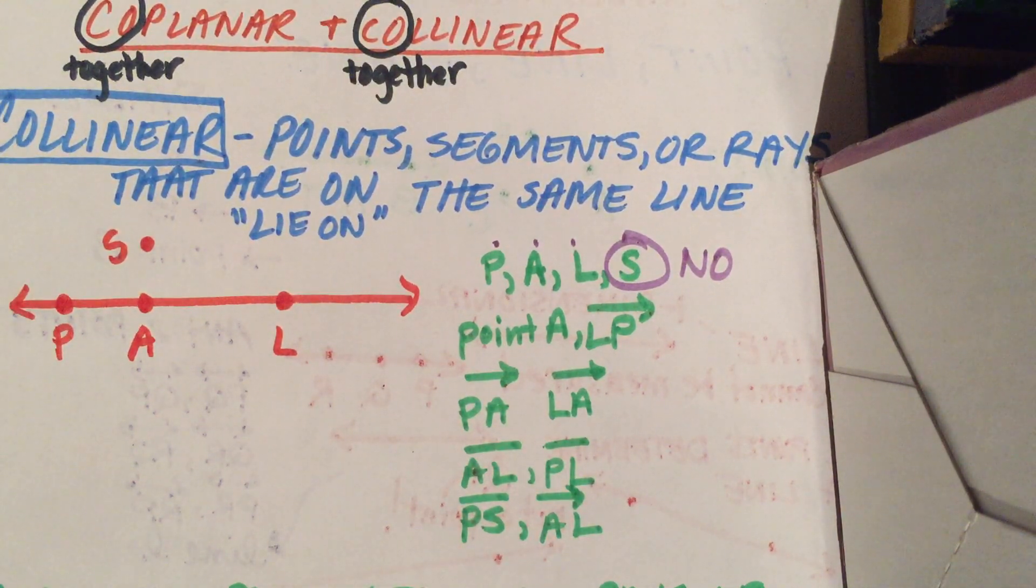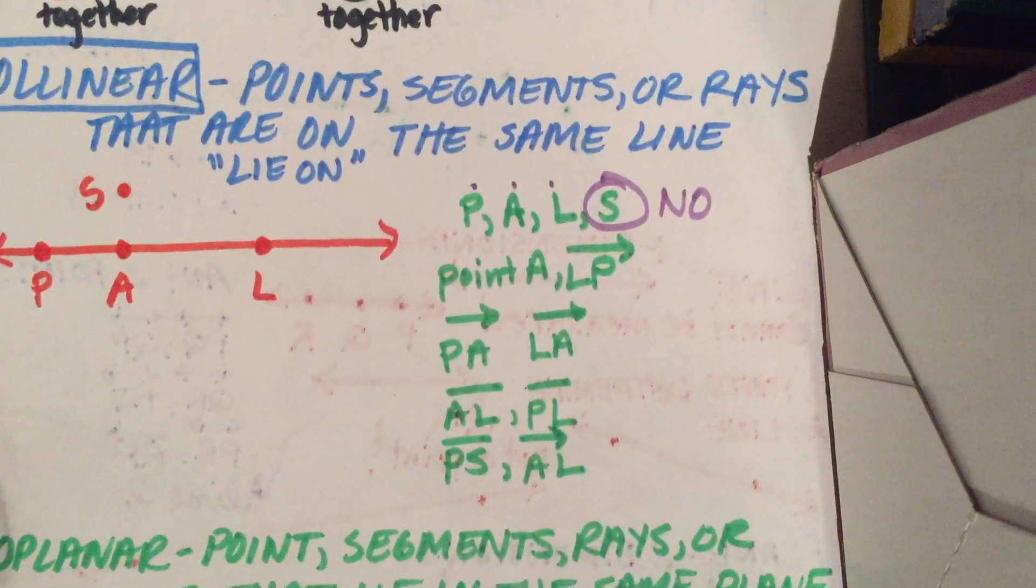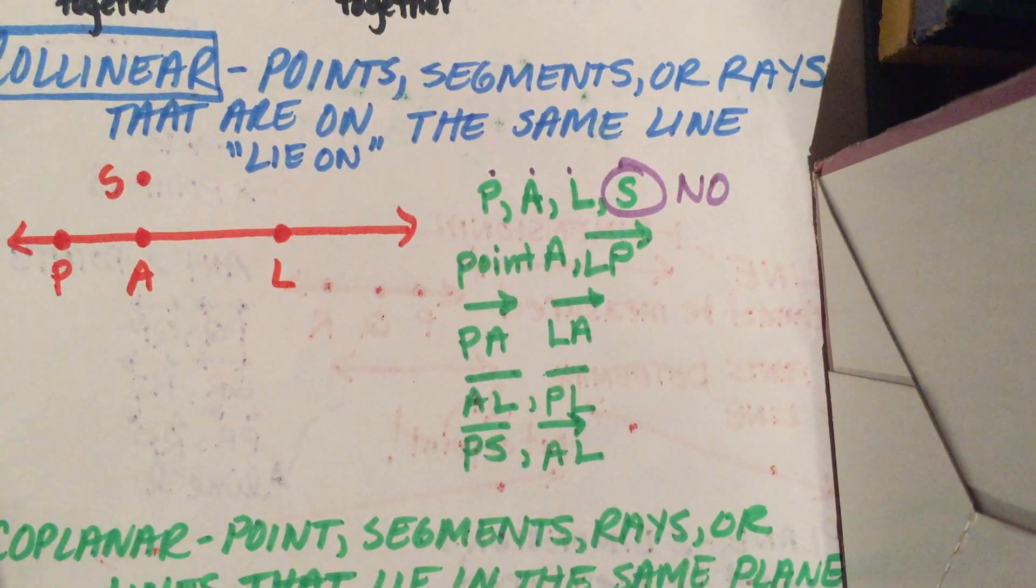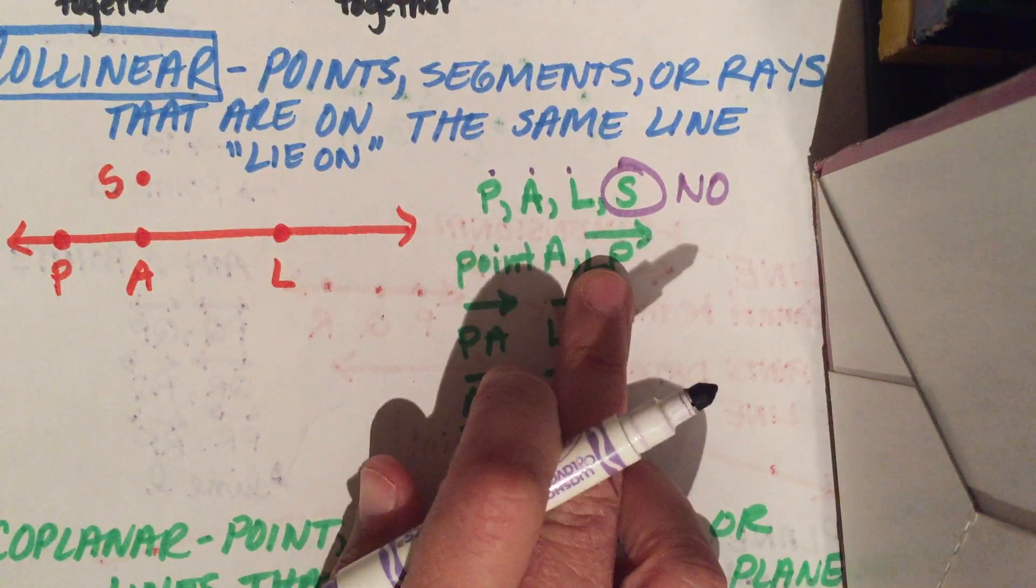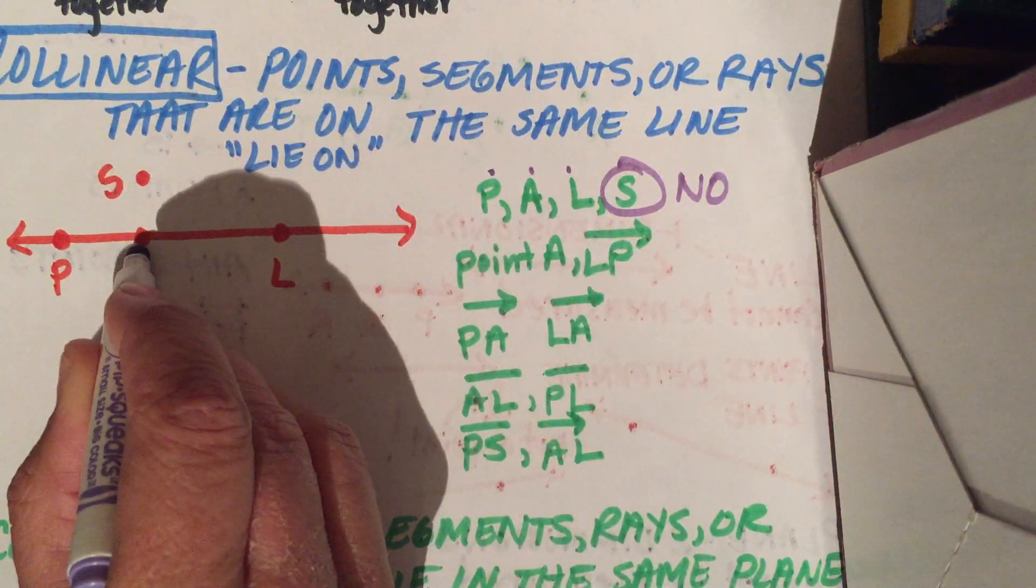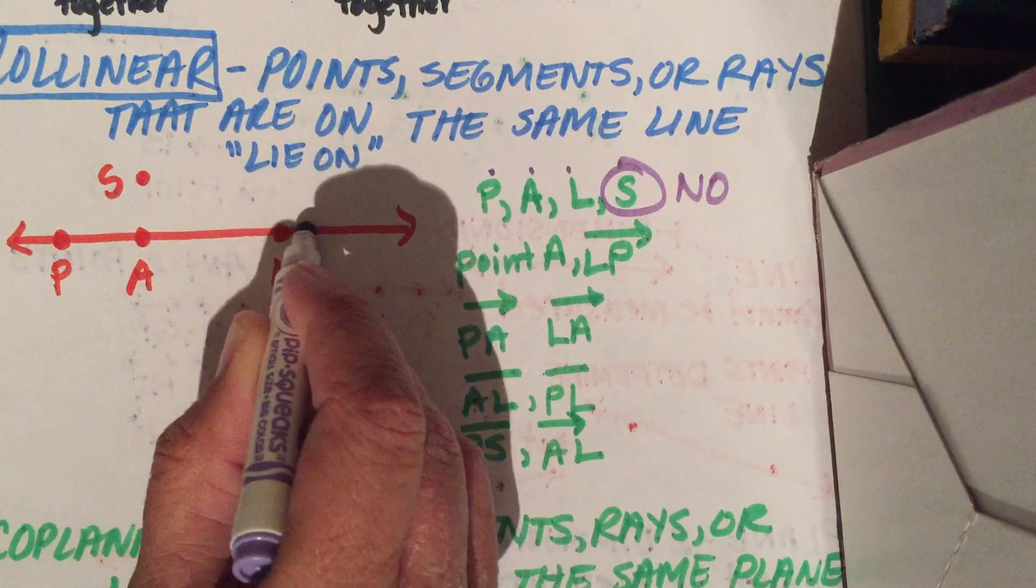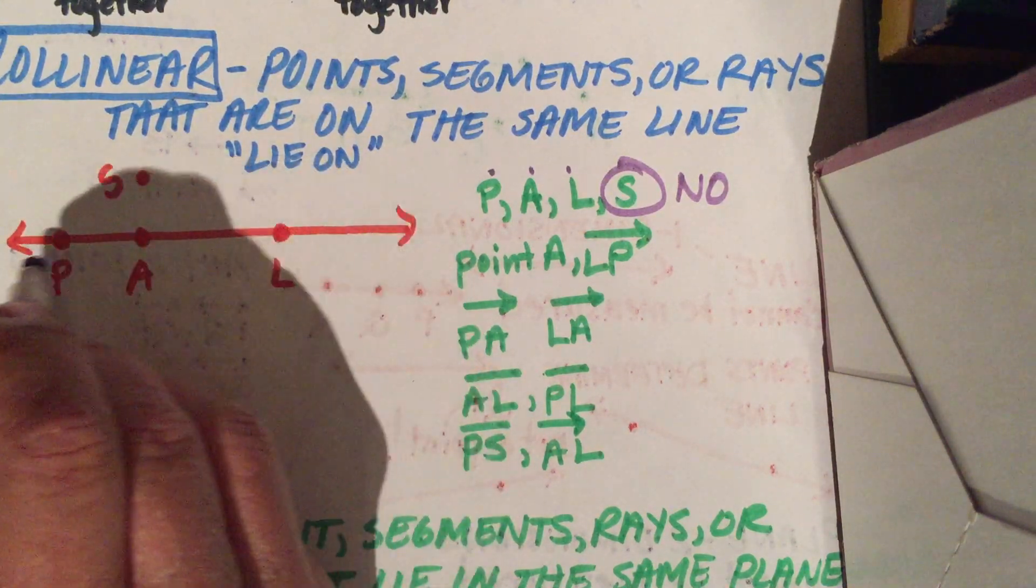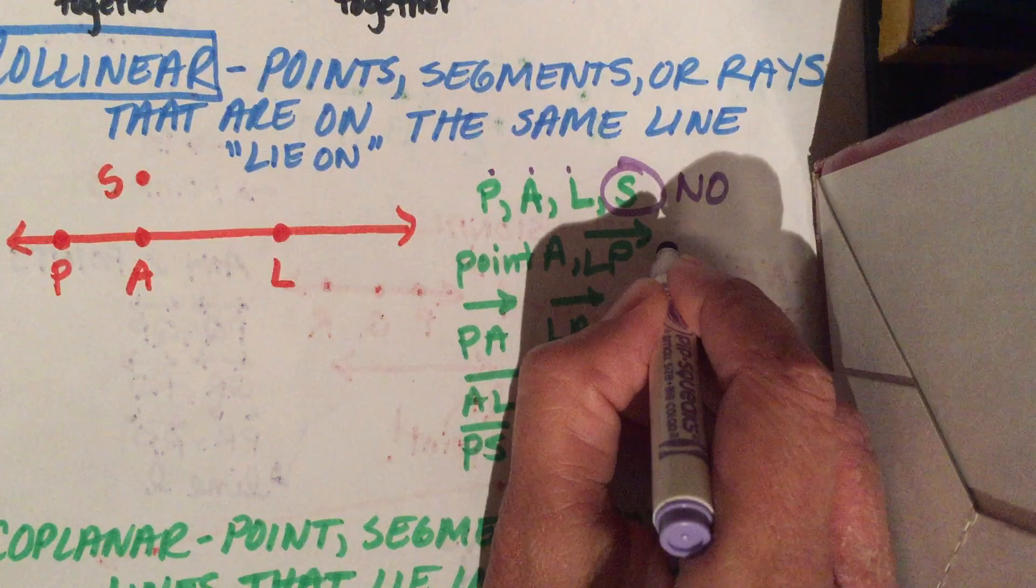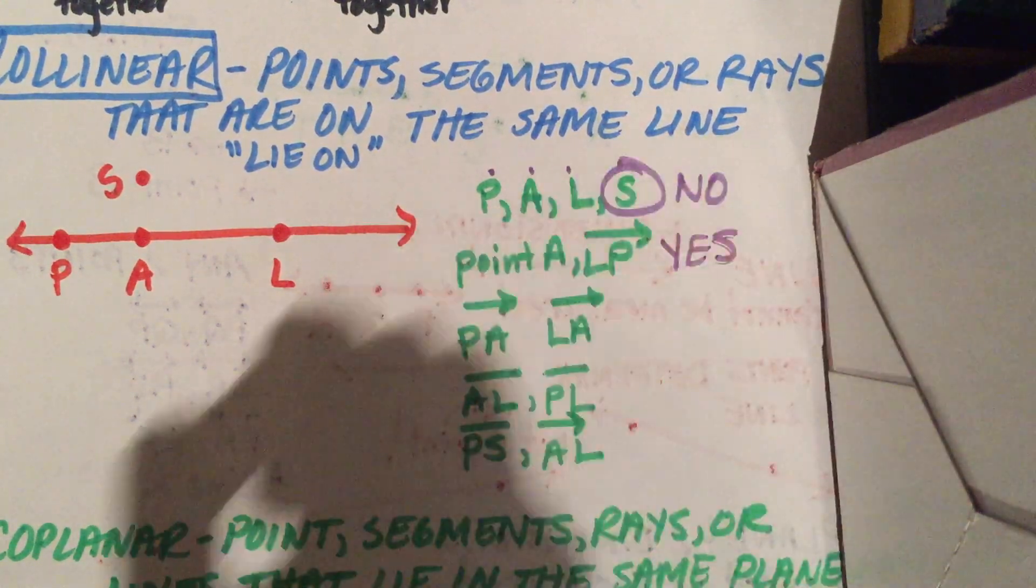So it can be any of the three. Let's look at the next one. Point A and ray LP. Let's look at the line. Is point A and ray LP on the same line? Yes, they are. So this would be yes. They are collinear.